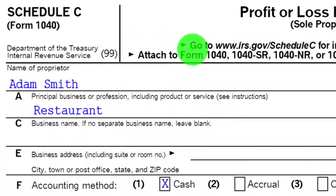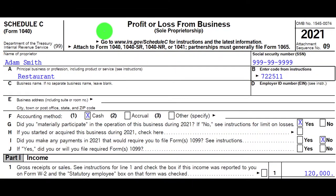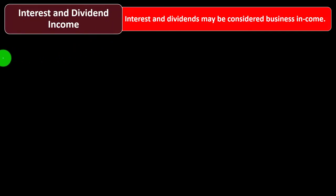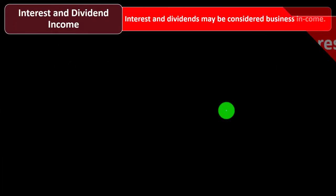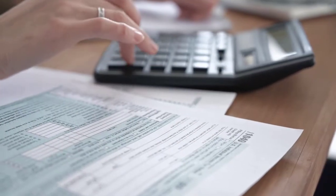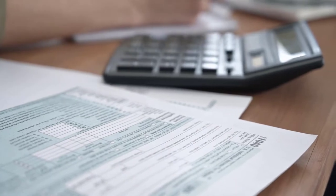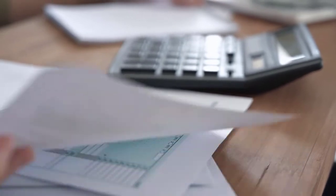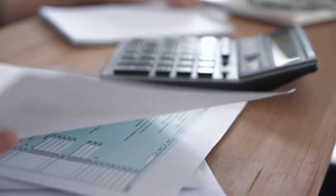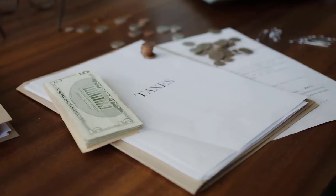On Schedule C, we're looking at profit and loss, focusing on the income line items. Now we have interest and dividend income. When a taxpayer has a sole proprietor business reporting income on Schedule C, they may also have interest and dividend income. The general rule is that interest and dividends come from stocks and bonds — types of investments — and those are typically invested on the personal side.